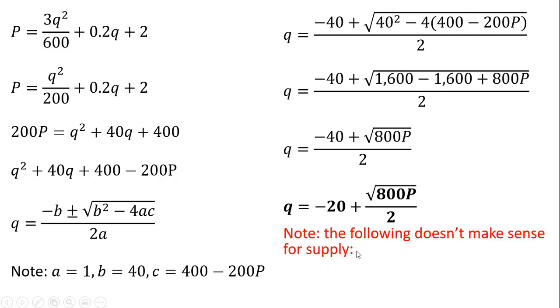So also note the following doesn't make sense for supply. So if we were to solve this, ignoring the plus, and instead had a minus sign here, you would have got this result. But that doesn't make sense. As P increases, quantity supplied decreases. No. There should be a positive relationship between the quantity supplied and the price. So we can ignore this answer.